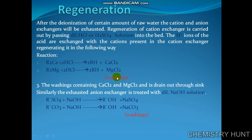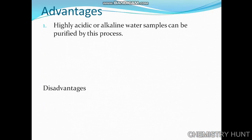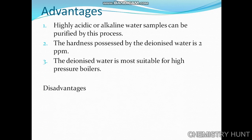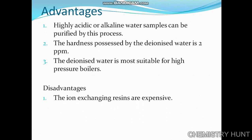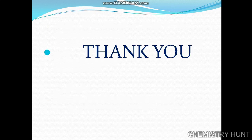The washings containing calcium chloride and magnesium chloride are drained out through the sink, and similarly the exhausted anion exchanger is treated with NaOH solution. Advantages: highly acidic or alkaline water samples can be purified by this process; the hardness of the deionized water is as low as 2 ppm; and deionized water is most suitable for high-pressure boilers. Disadvantages: the ion-exchanging resins are expensive, and raw water should contain turbidity below 10 ppm. Thank you.